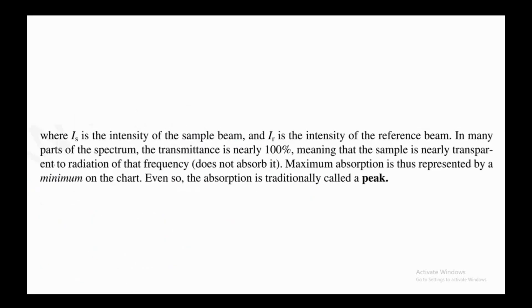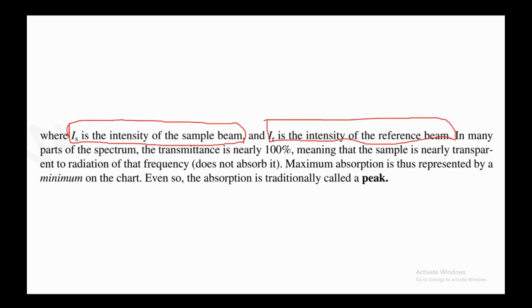Percent transmittance is calculated as (IS / IR) × 100, where IS is the intensity of the sample beam and IR is the intensity of the reference beam. In many parts of the spectrum the transmittance is nearly 100%, meaning the sample is nearly transparent to that radiation. Maximum absorption is therefore represented by a minimum on the chart — even so, absorption is traditionally called a peak.